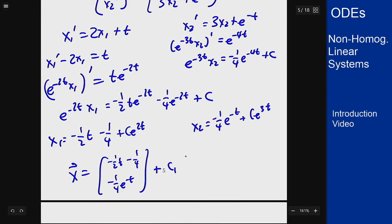Then -¼e^(-t) plus c₁ times the vector [1; 0]e^(2t) plus c₂, a vector [0; 1]e^(3t), because the e^(3t) term was in x₂ on the bottom and the e^(2t) was in x₁ on the top.